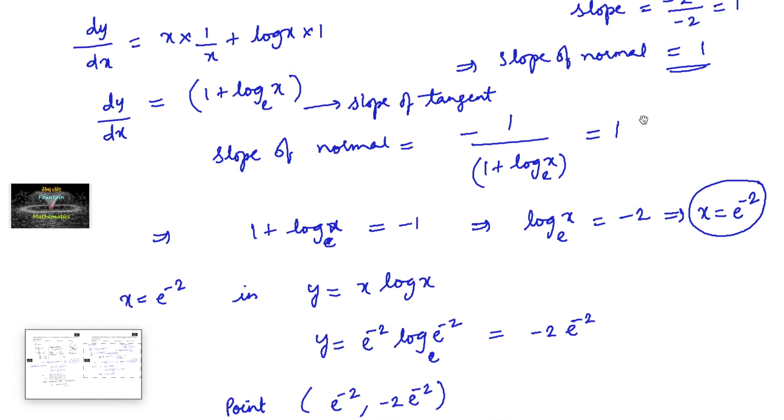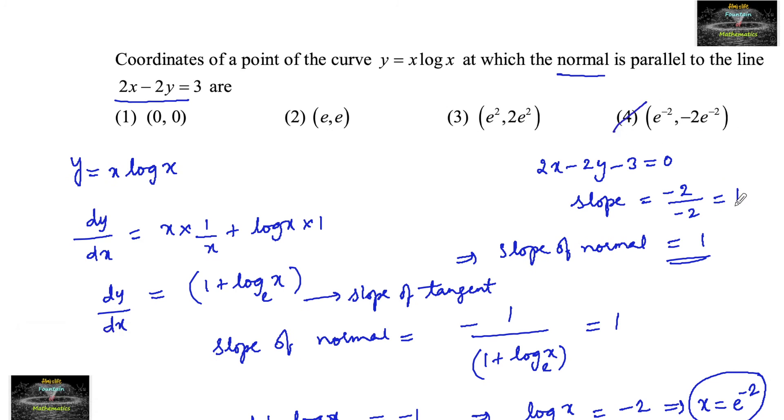e power minus 2, minus 2 e power minus 2 is option 4. We can go with option 4.